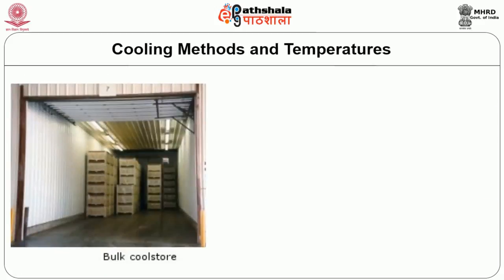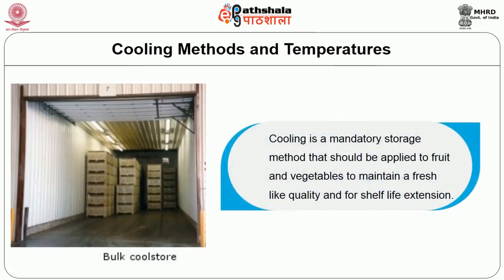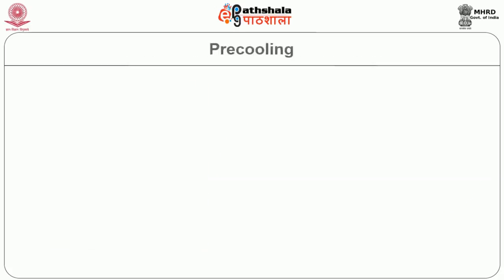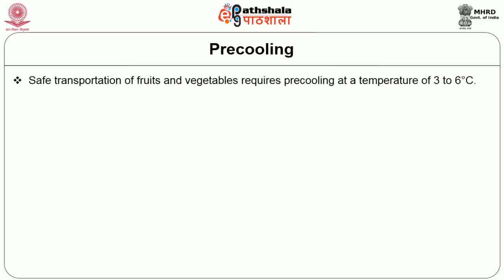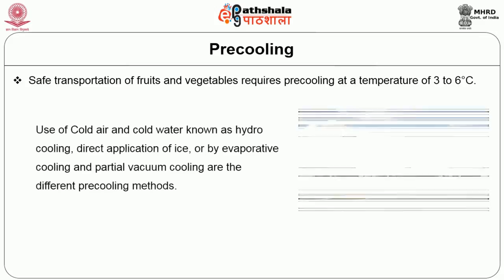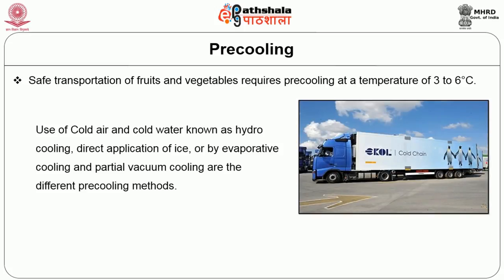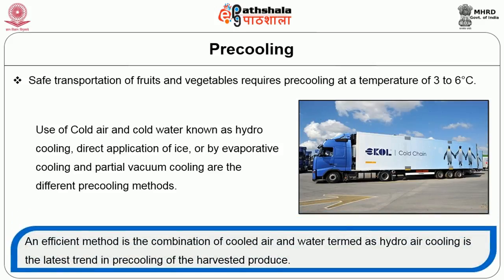Next are the cooling methods and temperatures used during storage. Cooling is a mandatory storage method that should be applied to fruits and vegetables to maintain a fresh-like quality and for shelf life extension. The first method is the pre-cooling process, where the safe transportation of fruits and vegetables requires pre-cooling at a temperature of 3 to 6 degrees Celsius. Use of cold air, cold water (known as hydro cooling), direct application of ice, evaporative cooling, and partial vacuum cooling are the different pre-cooling methods. An efficient method is the combination of cold air and water, termed hydro air cooling, which is the latest trend in pre-cooling of the harvested produce.